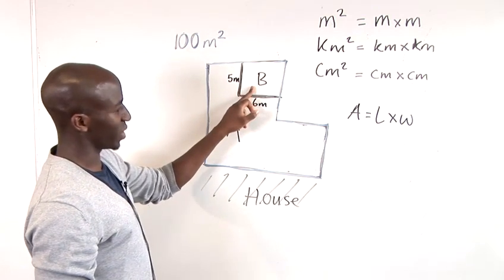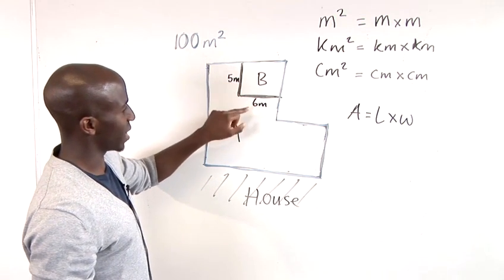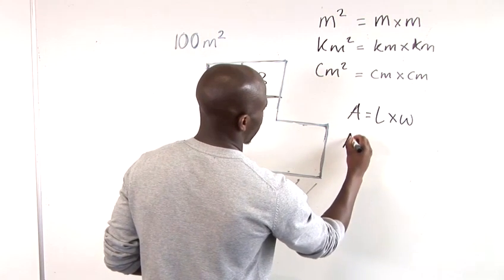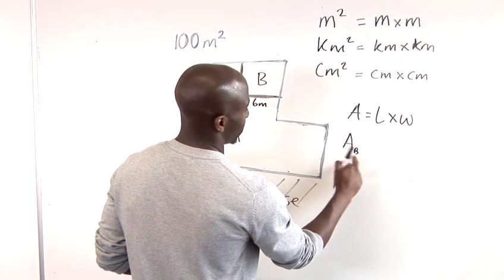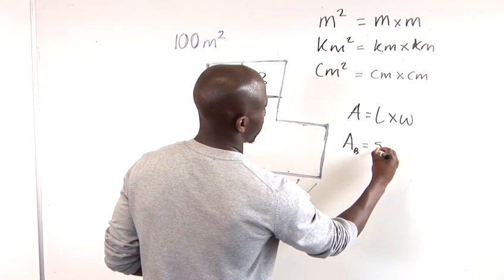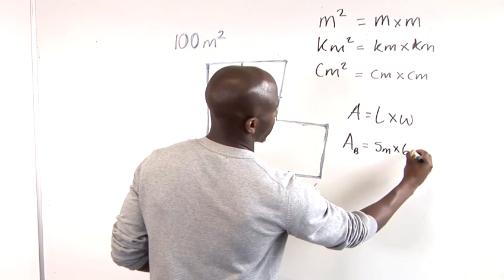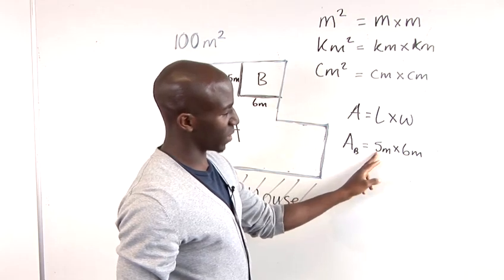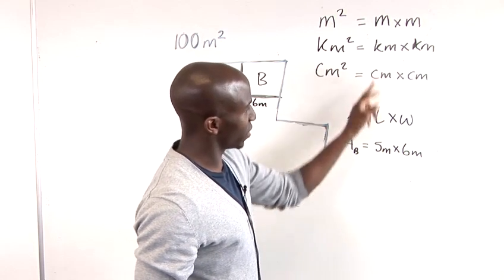So for B we can make a direct calculation about this because we have the lengths and we have the width. So the area of B is equal to 5 metres times width. 6 metres. And all we have to do is multiply the numbers together and of course multiply the units together which is here.